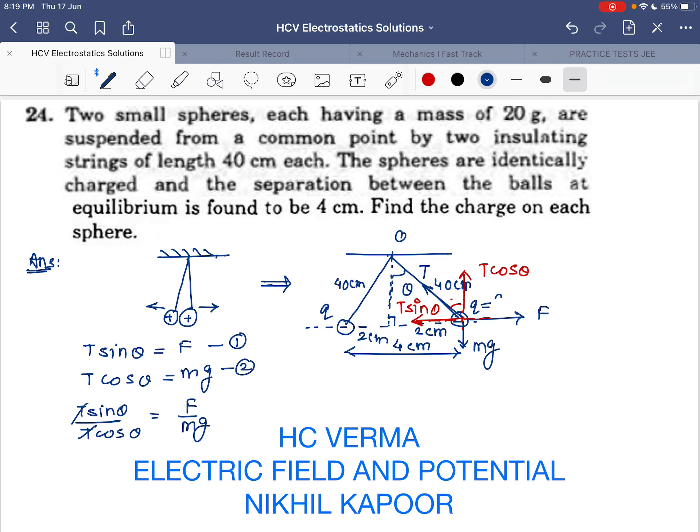We need to find the value of the charges, so we must put the value of force here. Sin theta over cos theta becomes tan theta. I can say tan theta equals k q squared over r squared divided by mg.